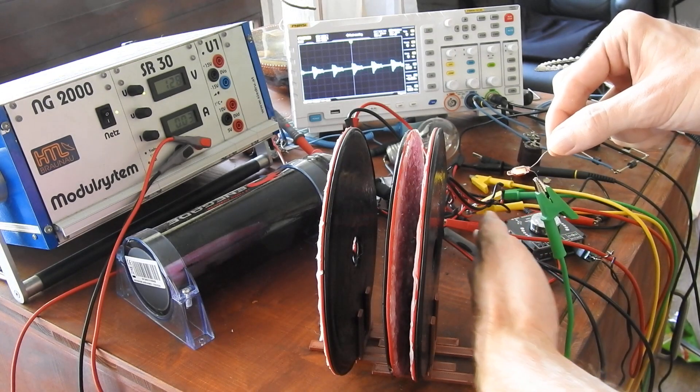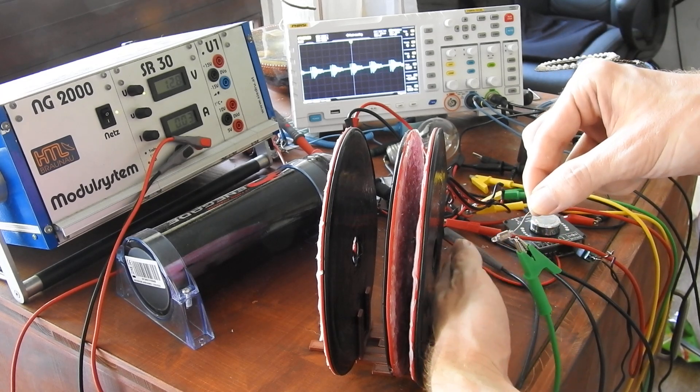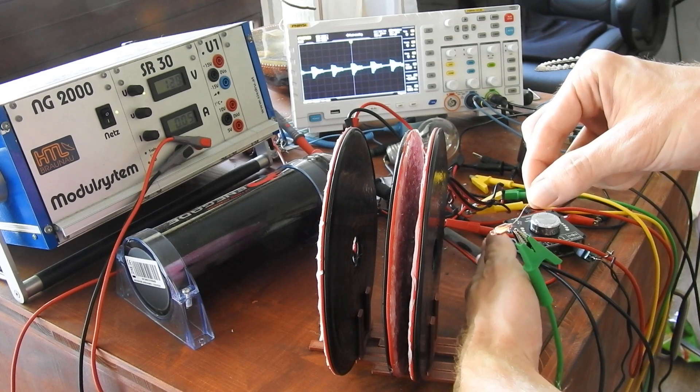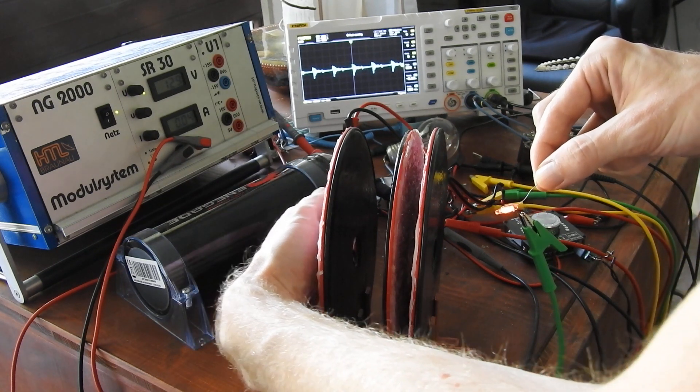If I get my hand closer to this coil, the light will go out. So it does basically the opposite of when I come here closer.